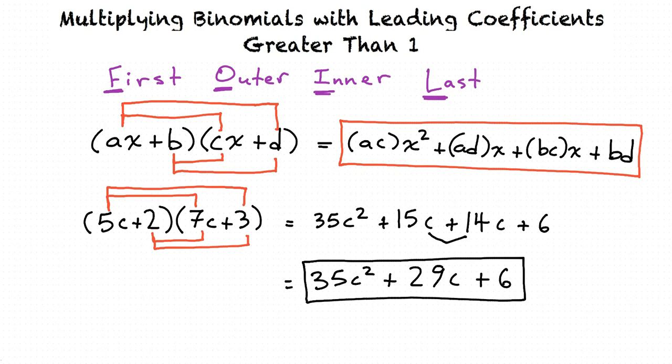I understand. First, we multiply the first terms of each binomial. Then we multiply outer terms together, inner terms together, and last terms together. After this, we add each of these together to obtain the result. If necessary, we simplify as far as we can. Is this correct?